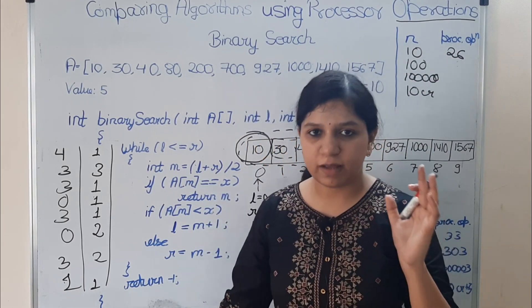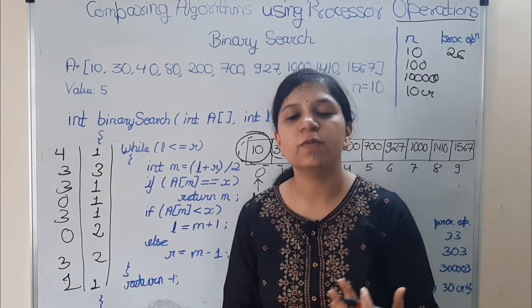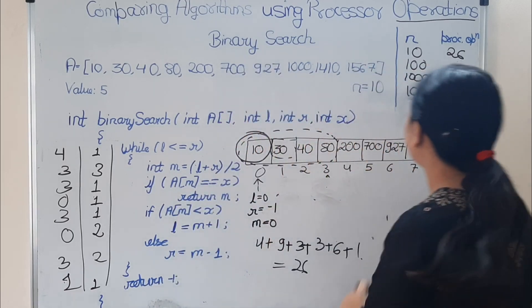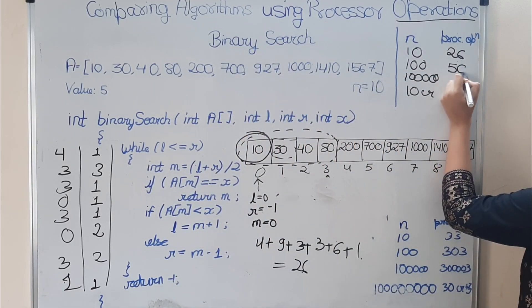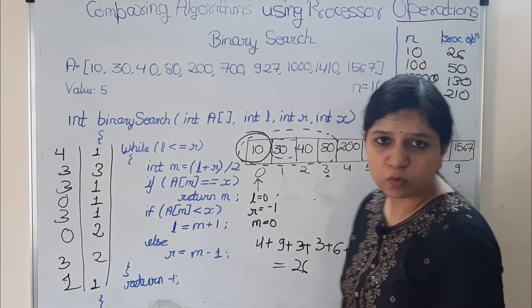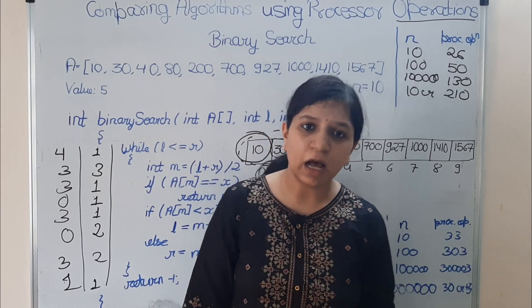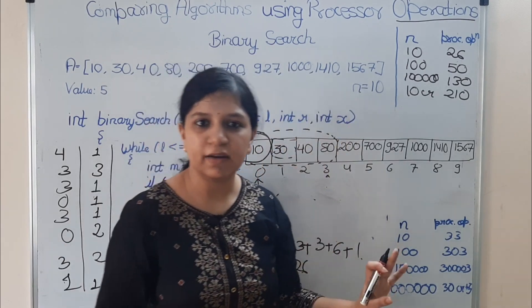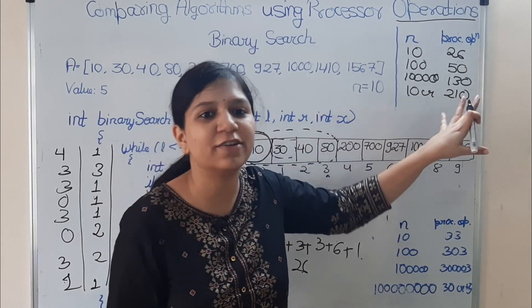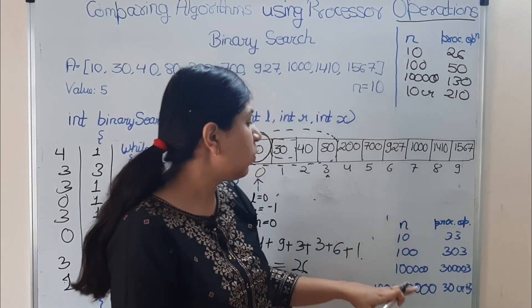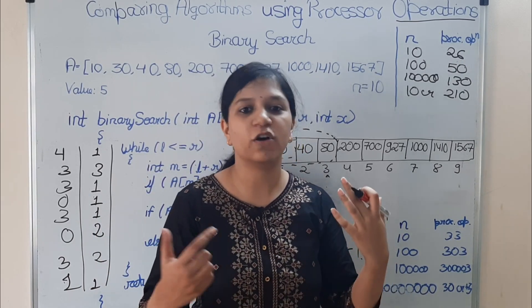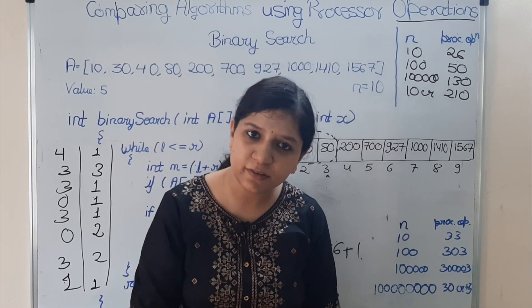Similarly, for n = 100, 1 lakh, and 10 crores, the processor operations were 50, 130, and 210 respectively. Comparing: for 10 crores inputs, binary search takes 210 processor operations while linear search takes 30 crores + 3 operations. Binary search is clearly the better algorithm — it takes far fewer processor operations.